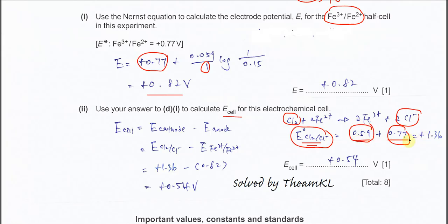You get 1.36 volt for the chlorine electrode. The chlorine half-cell is positive 1.36 volt. Substitute this E° half-cell to the calculation. Therefore, it's 1.36 minus the one we calculated in part 1: 1.36 minus 0.82 equals 0.54 volt.